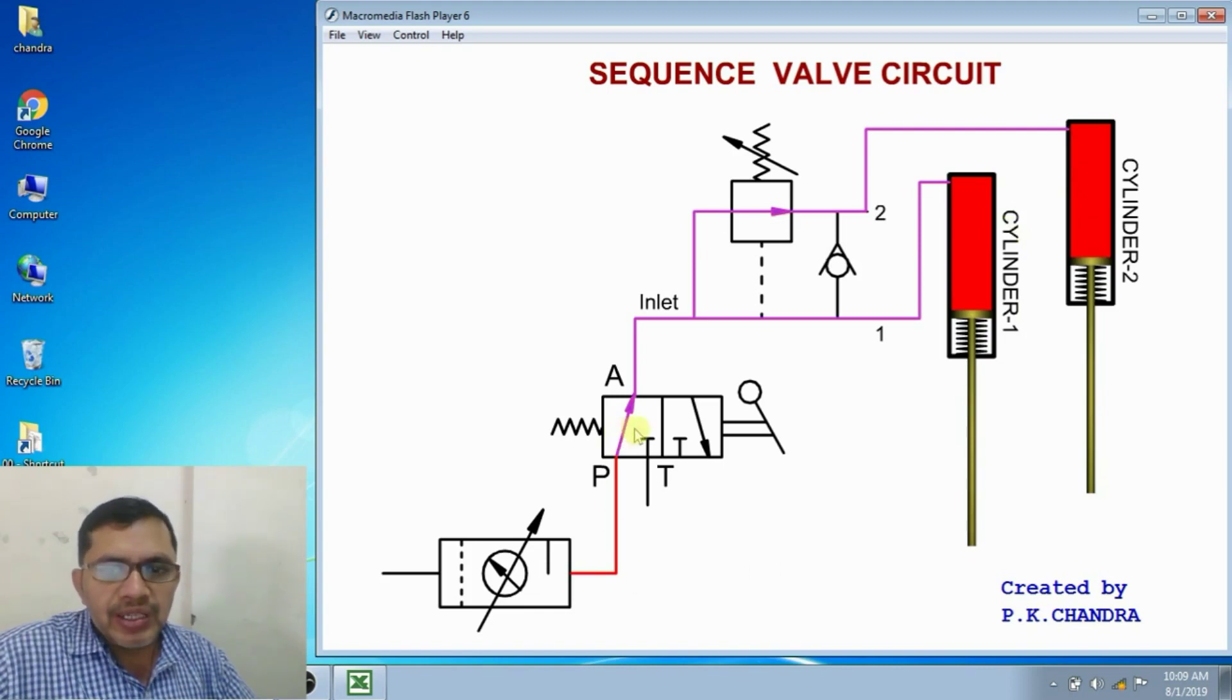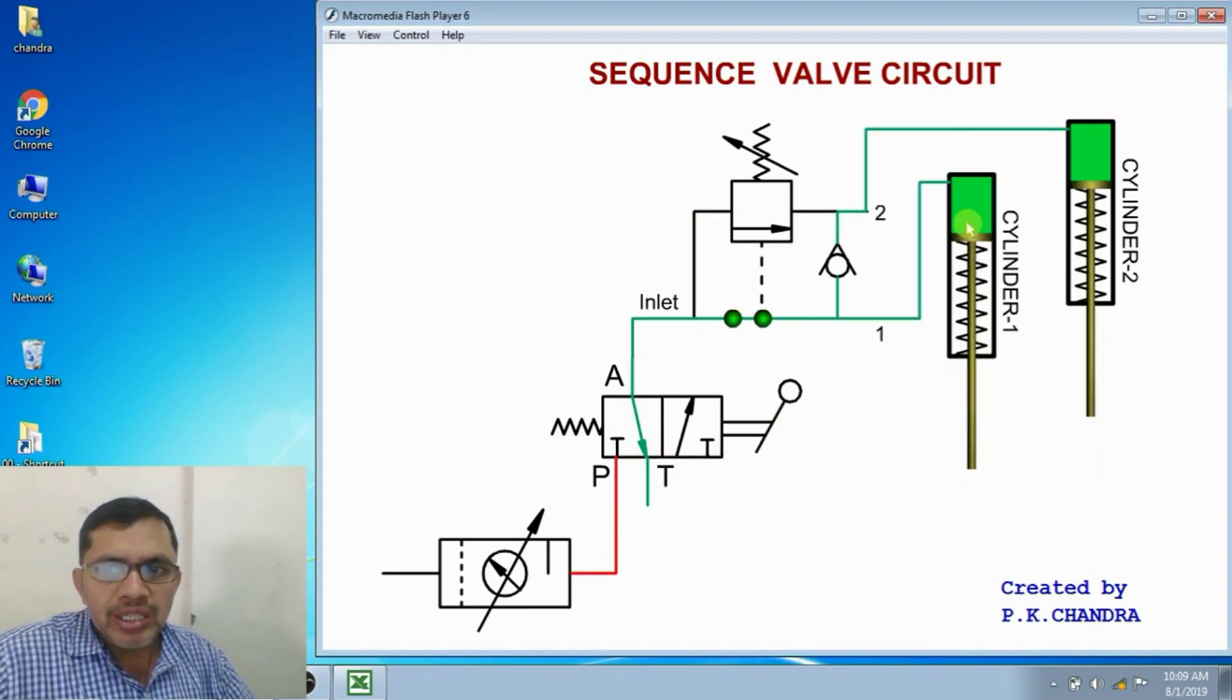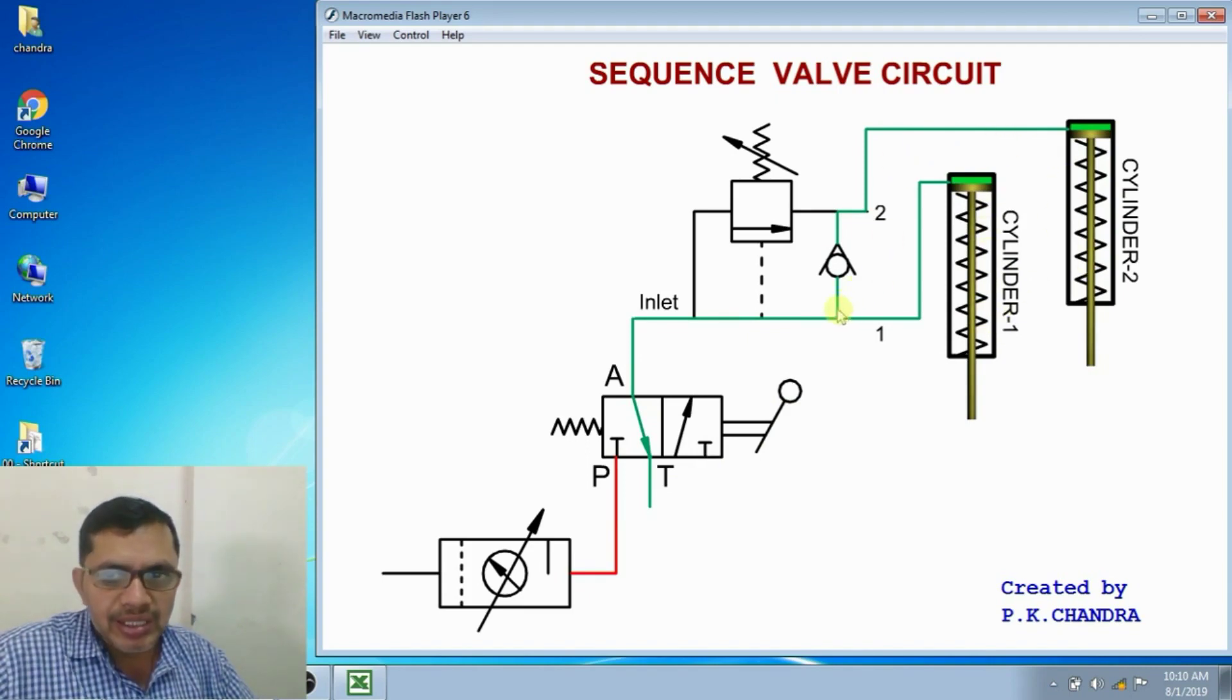When we keep the lever in the other position, A to T connection will be made. And both cylinders are retracting simultaneously. During retraction, there is no sequence. Both the cylinders are retracting simultaneously. From both cylinders, the fluid flows out.